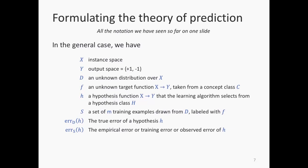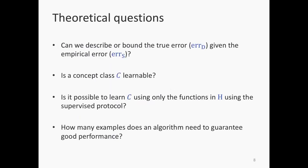The goal of PAC learning is to describe or bound the true error in terms of the empirical error. The empirical error is what we can measure — we can count how many examples a classifier gets wrong using a dataset. The true error is what we care about. Can we say that the true error won't be too far off from the empirical error? If so, we can use the empirical error to get guarantees about the true error.